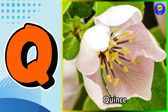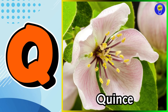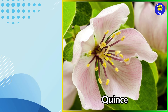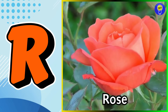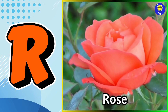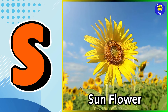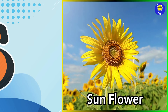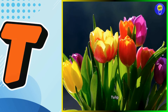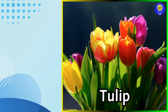Q is for Quince flower. Q, Q. Quince flower. R is for Rose flower. R, R. Rose flower. S is for Sunflower. S, S. Sunflower. T is for Tulip flower. T, T. Tulip flower.